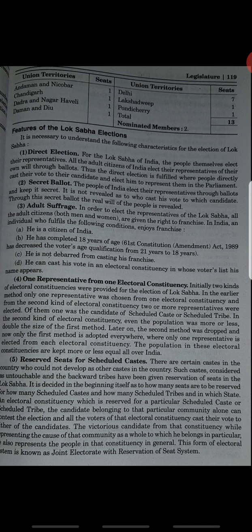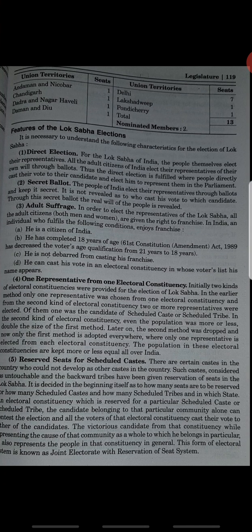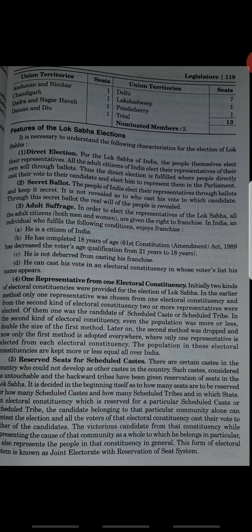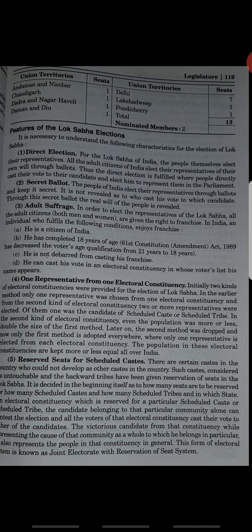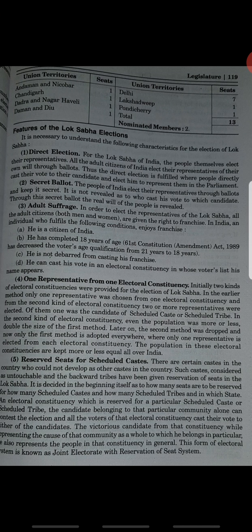Features of Lok Sabha: first, direct election — the elections for Lok Sabha are conducted directly with people's participation. A voter must have completed 18 years of age, not be debarred from exercising his franchise, and his name must appear on the electoral constituency voters list. This is all for now, and the rest of the chapter will be completed in our next class.